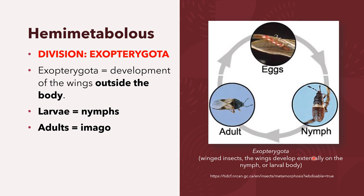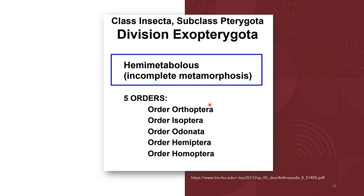In the order Ephemeroptera (mayflies), there is also a sub-imago stage just before the final adult stage. Various orders under Exopterygota exhibit hemimetabolous development, among them the orders Orthoptera, Isoptera, Odonata, Hemiptera, and Homoptera — five among the many orders of this division that exhibit incomplete metamorphosis.